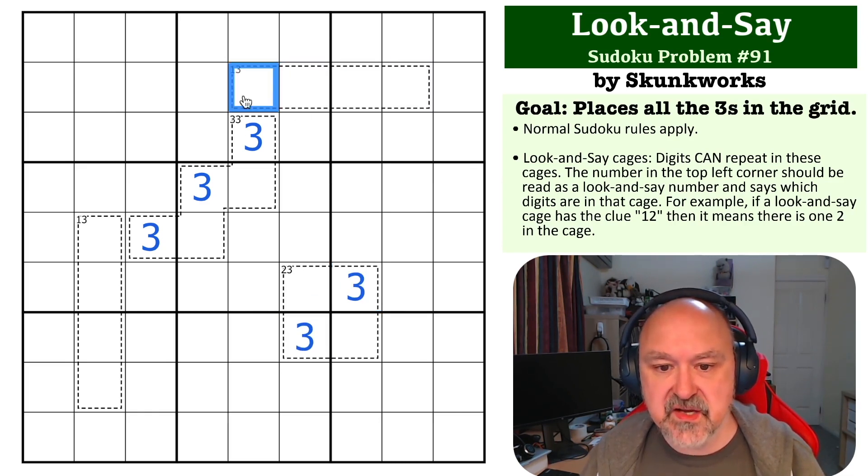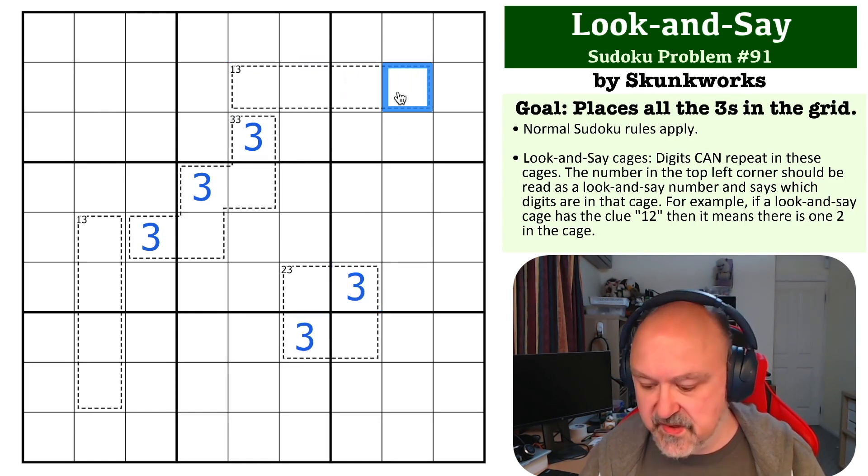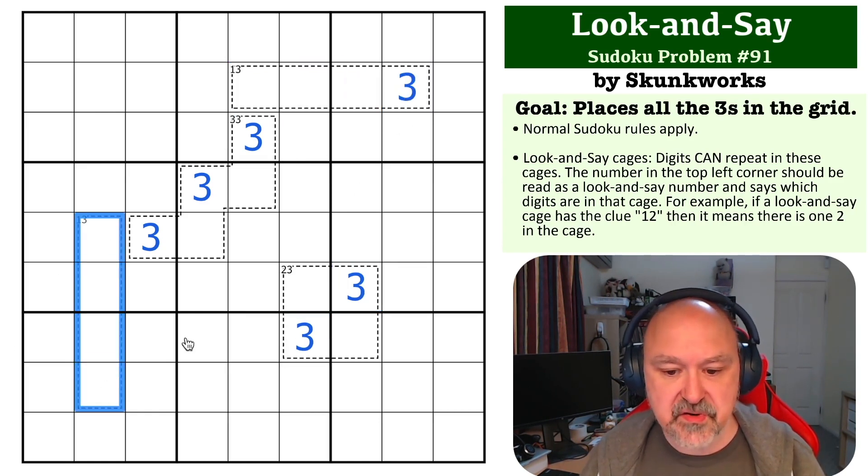Now, this one 3 cage, this cell sees this one, this sees here, this sees here, so this becomes the 3. And the same is true here. These three all see 3s, so this becomes the 3, and now we can just do the basic Sudoku to finish off the puzzle.